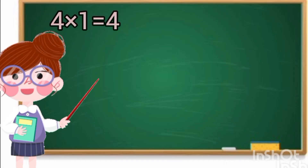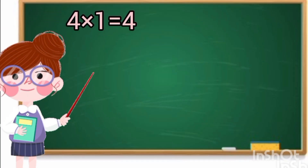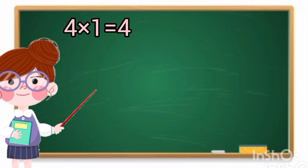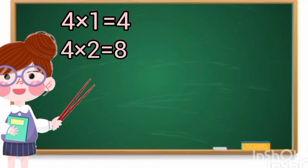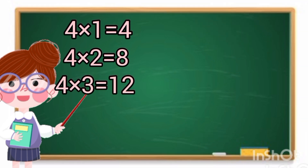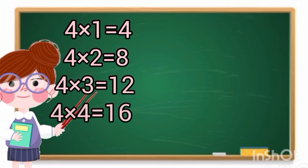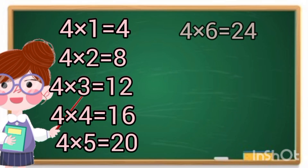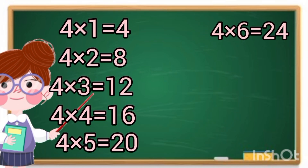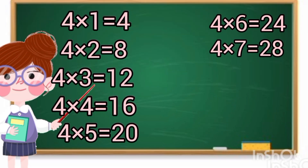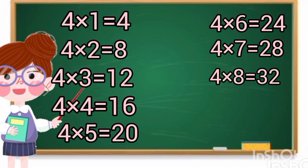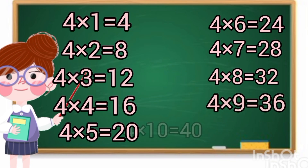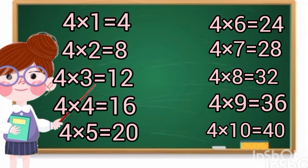4 1's are 4. 4 2's are 8. 4 3's are 12. 4 4's are 16. 4 5's are 20. 4 6's are 24. 4 7's are 28. 4 8's are 32. 4 9's are 36. 4 10's are 40.